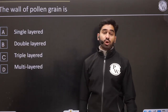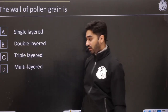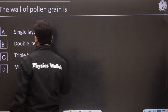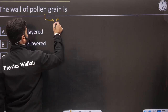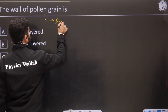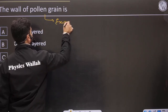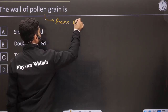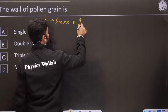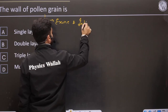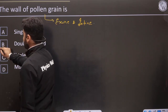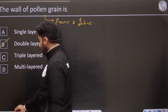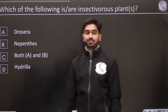Next: wall of pollen grain. The wall of pollen grain — we said it is made up of exine and intine. It is a double-layered structure.